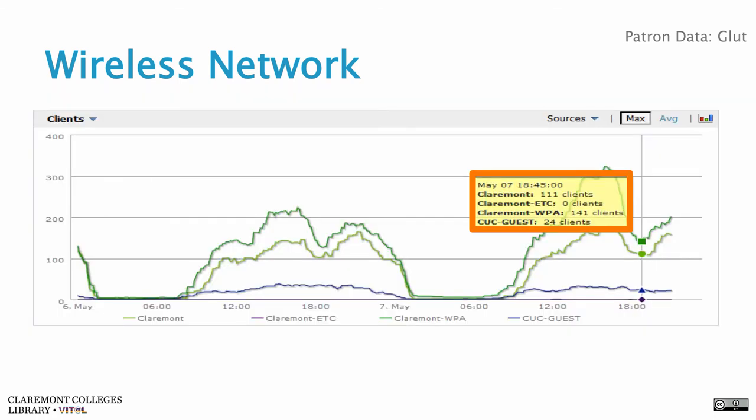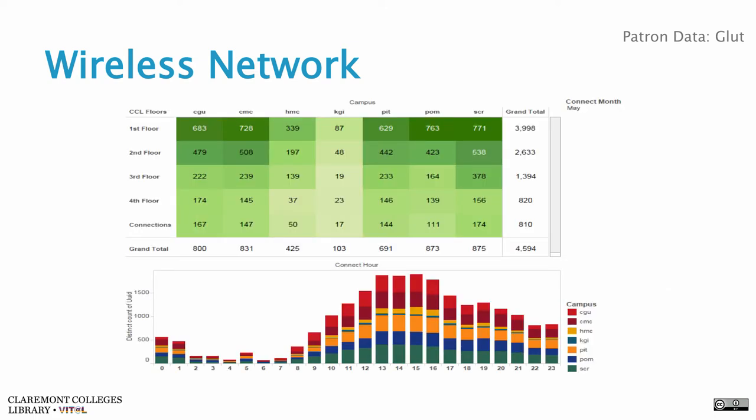If you do nothing, the wireless controller can take the place of those gate counts. This is just a dashboard view from the wireless controller telling me there are 111 clients on the network, 141 more on the encrypted network, and 24 client guests. I've gone out and ground-truthed this and figured out that everybody's carrying 1.8 devices — associates at Northern Arizona University went through the same exercise and got 1.8 devices. We can take it another step further and count the network IDs.